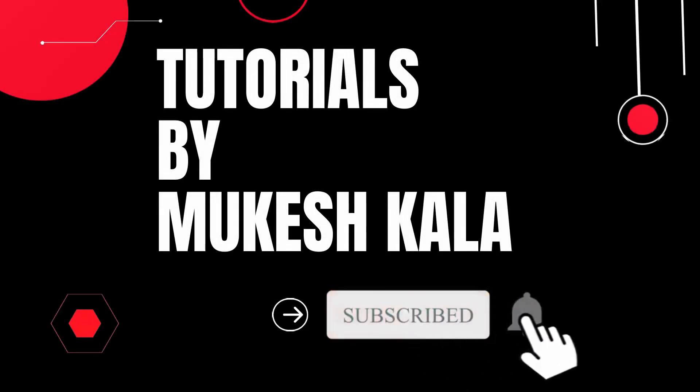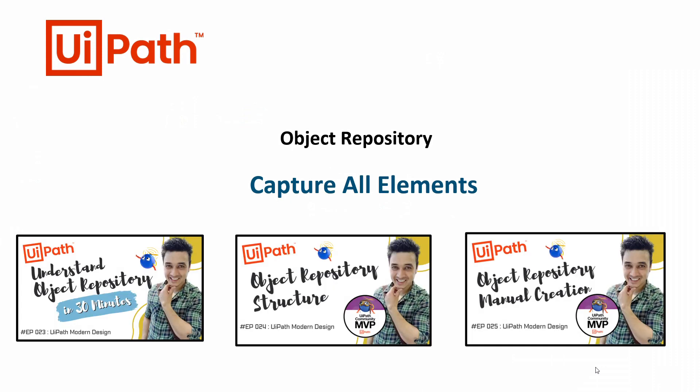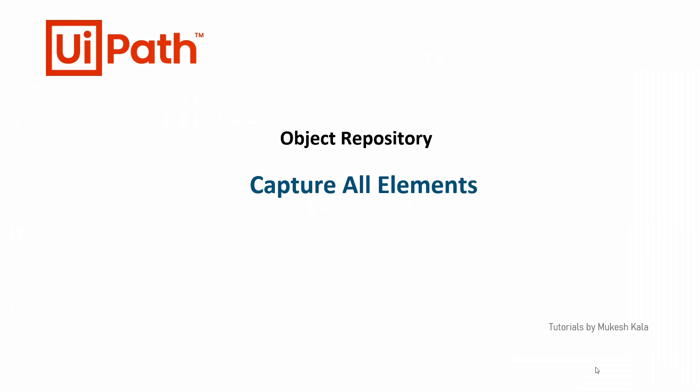Next, in the object repository, today we are going to see a functionality called 'capture all elements.' In previous videos of the object repository series, we have seen what an object repository is, why it is important, how to create it, how to record it, and how to manually create and share it across multiple projects. Today we are going to continue that topic and look at capture all elements. If you are not familiar with the object repository basics, I would request you to watch the previous video first.